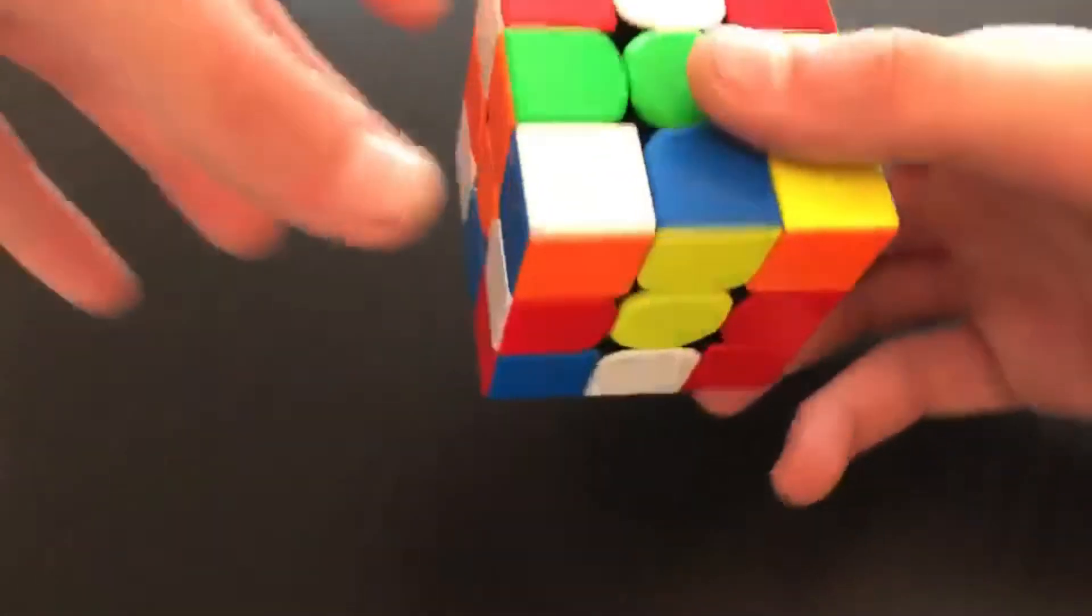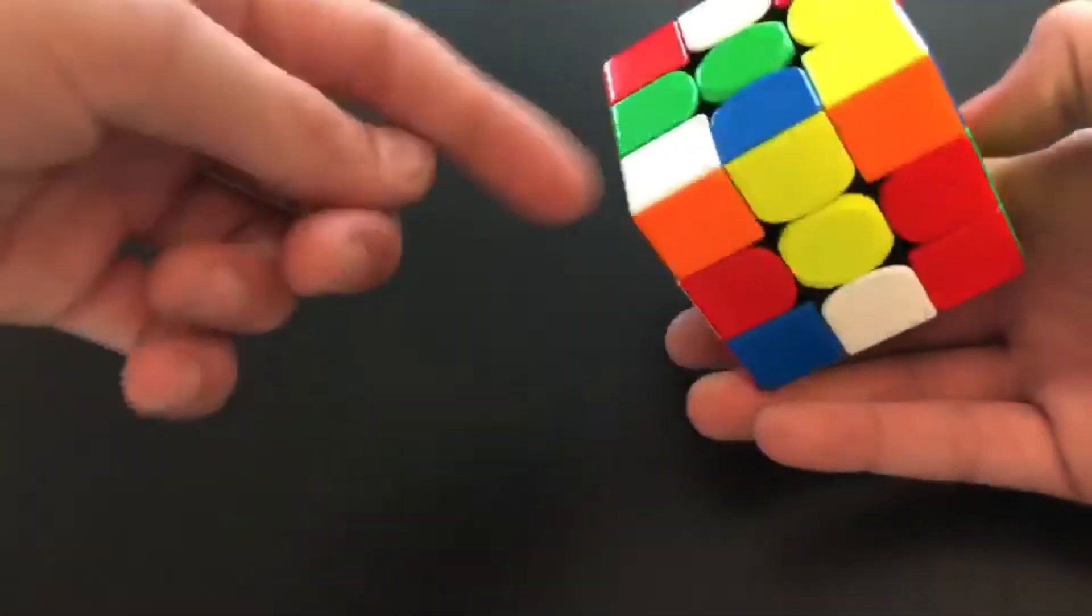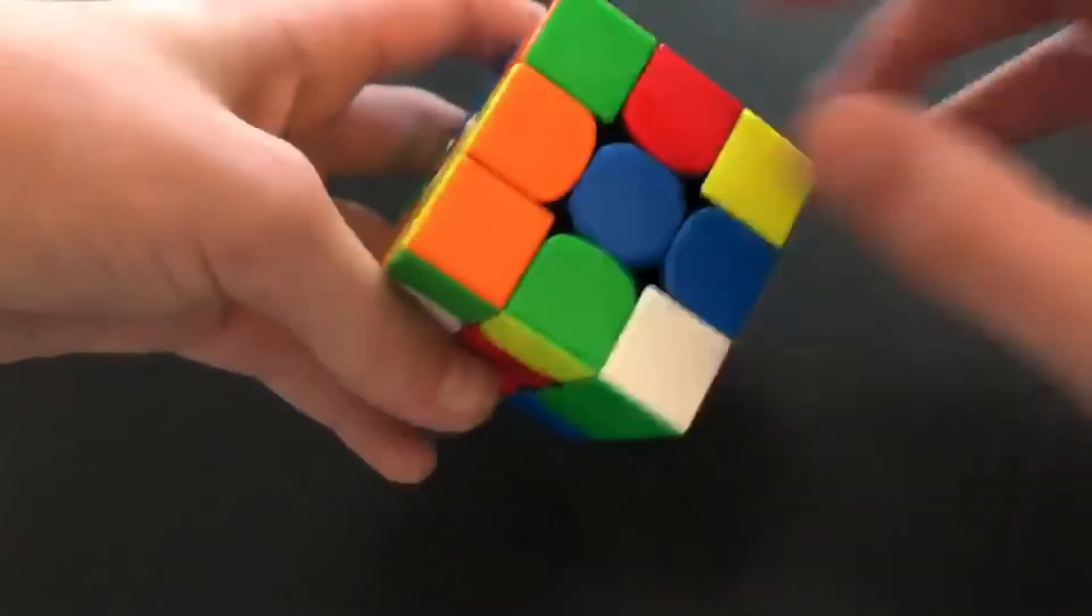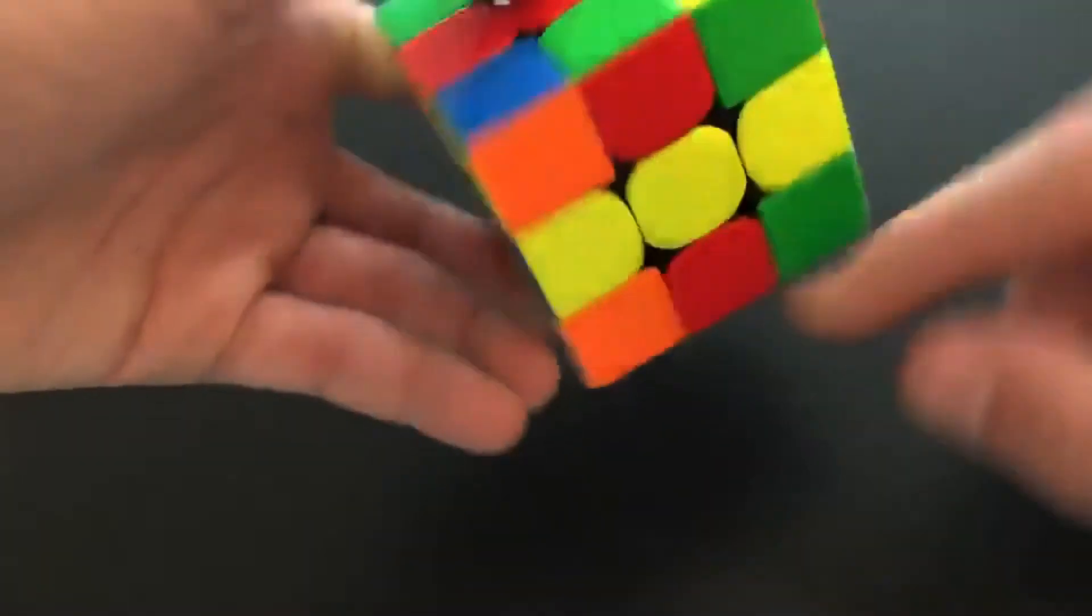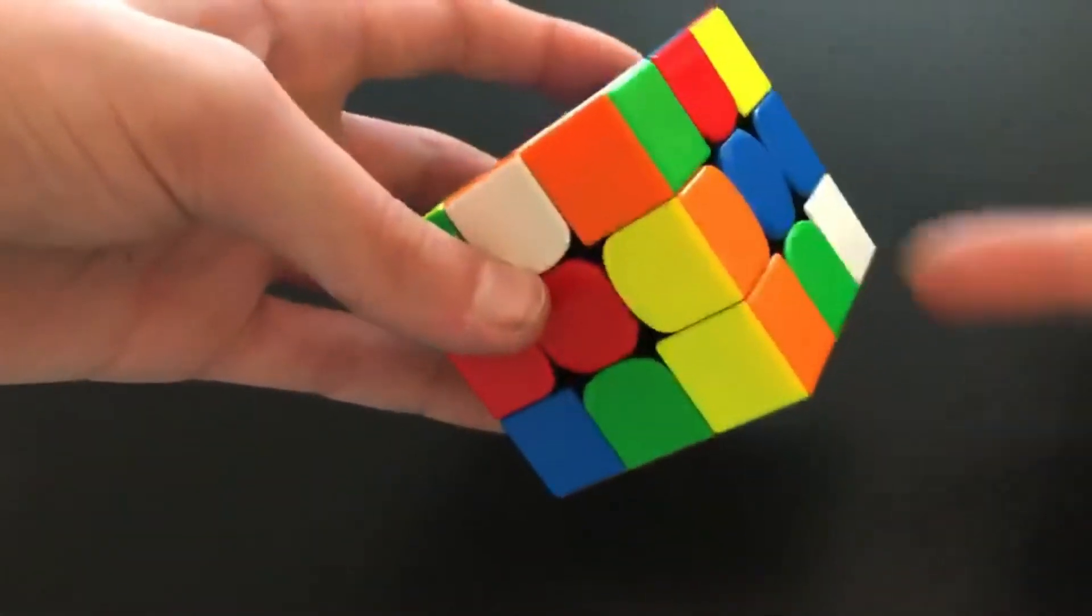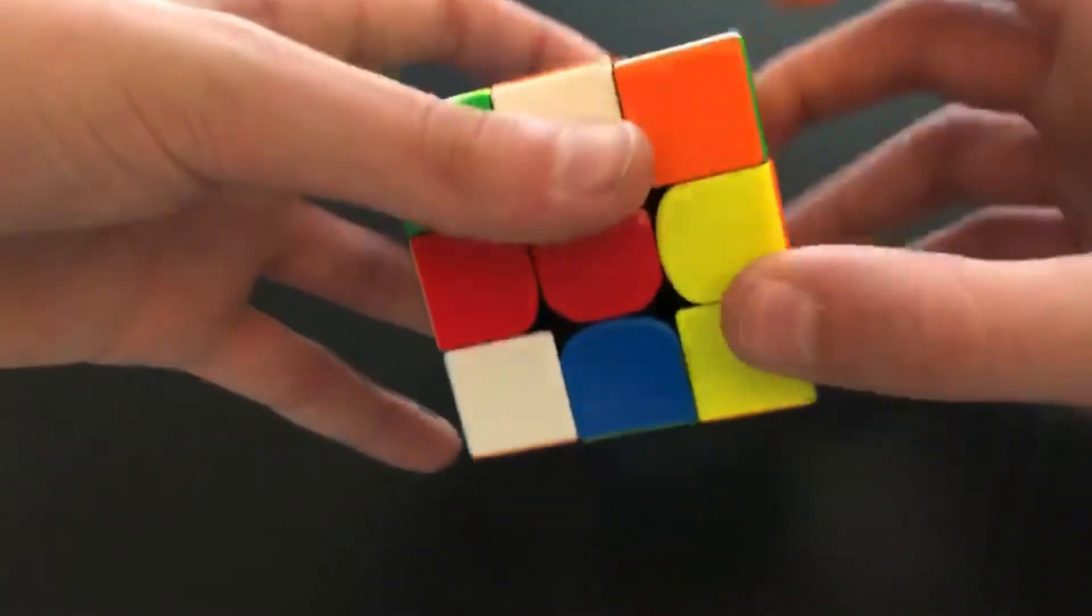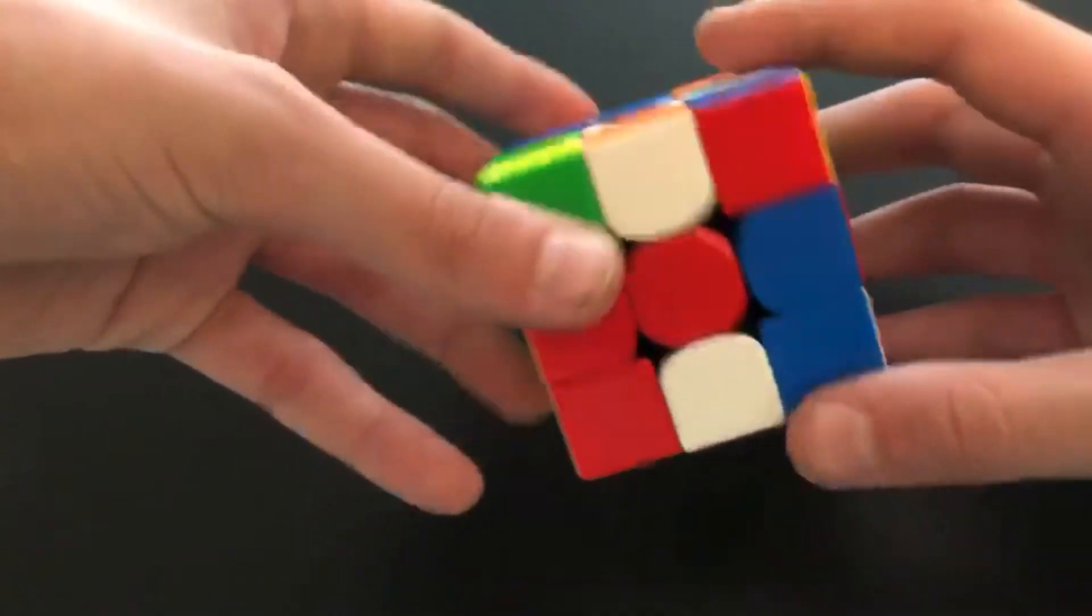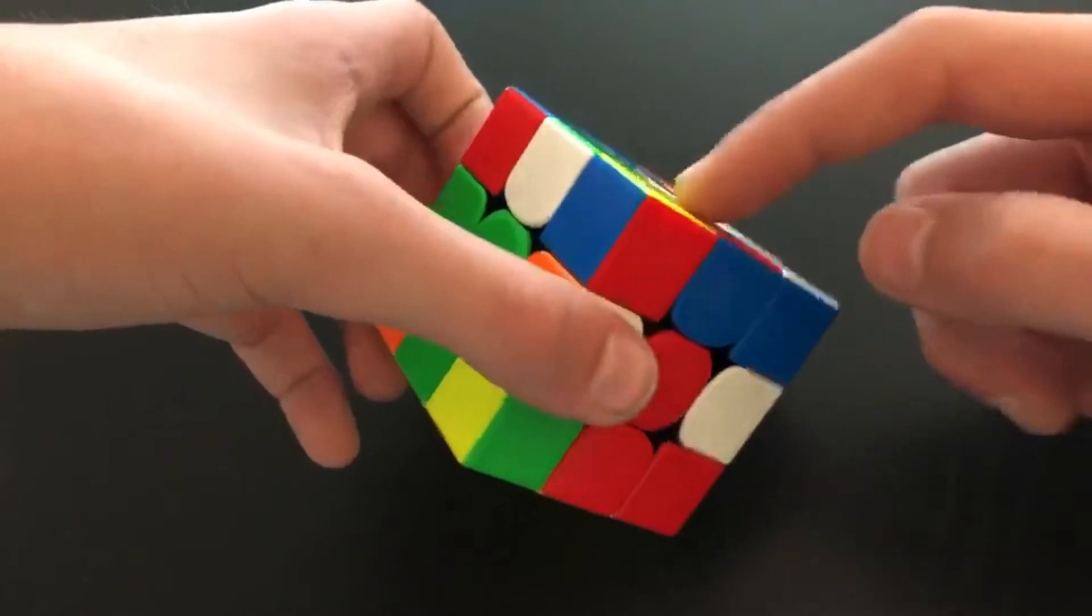On to the second one now. I also did a yellow cross because it was pretty easy here. So this and this, you can just insert green, and boom, they're opposite in relation to being solved. And then D R prime D, and then F prime to finish off the cross. Then this was my first pair.